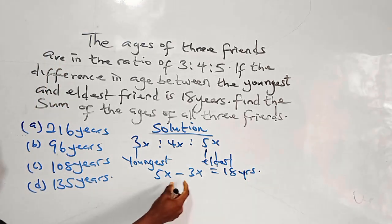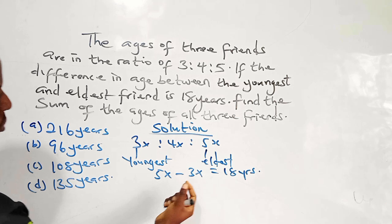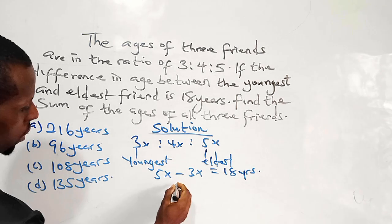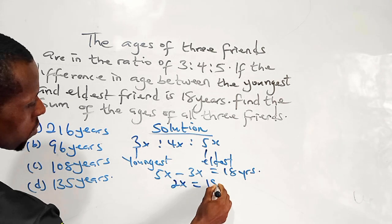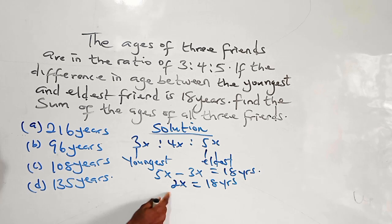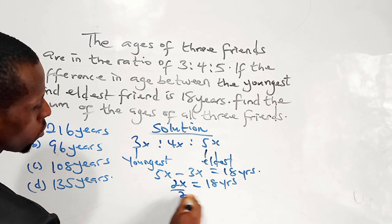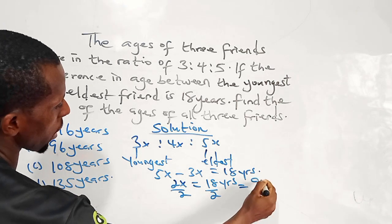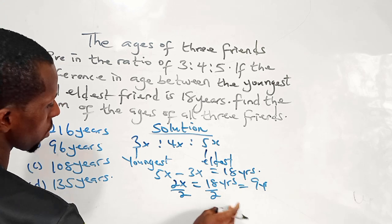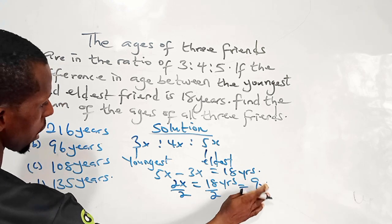So from here, we can determine what x stands for. So we say 5x minus 3x is 2x equals 18 years. So by time we divide both sides by 2, we have 9. For x, so x represents 9.